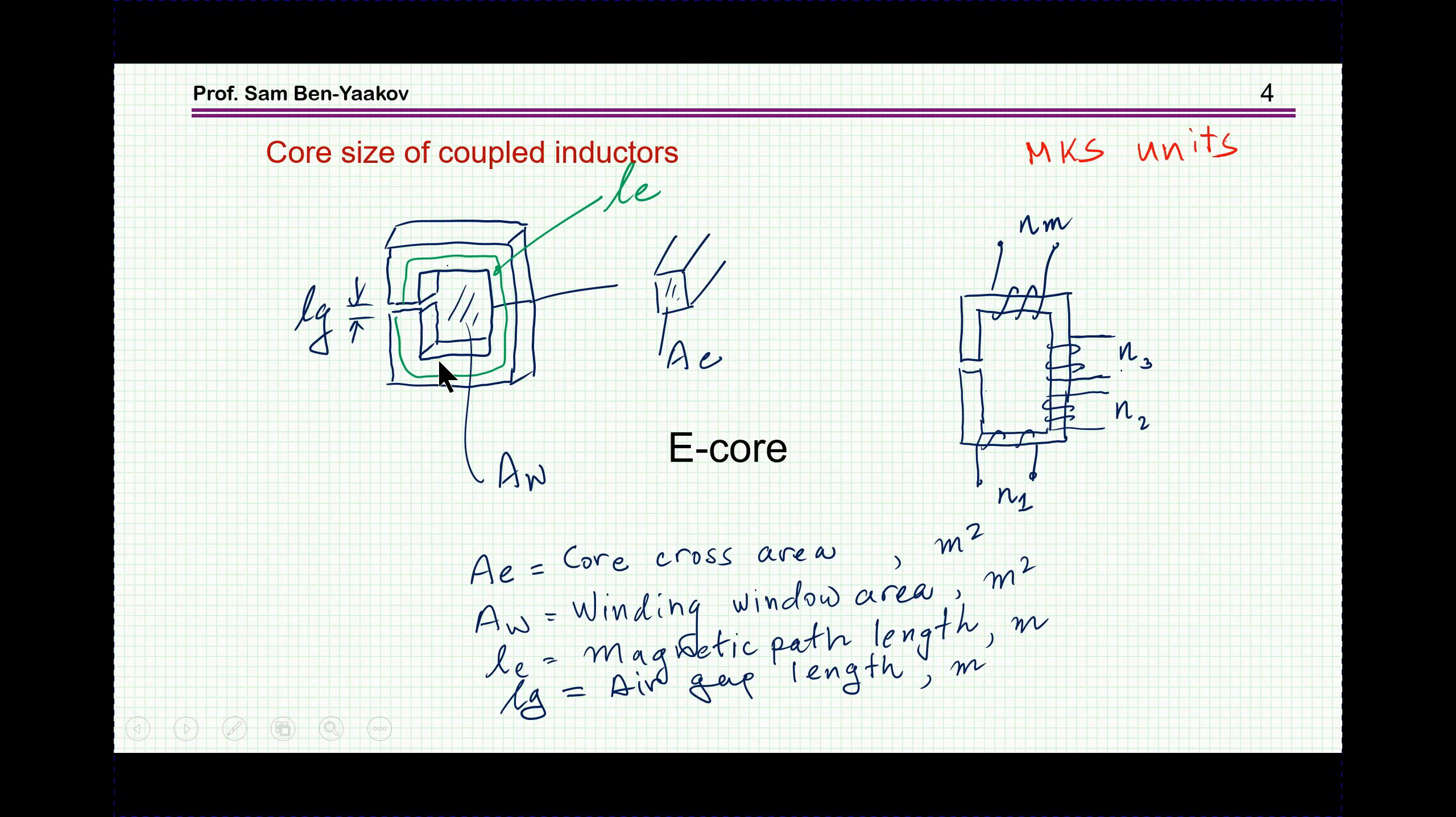We define here for this particular generic core the cross-section area of the core and the area of the winding, the winding area. I'm going to work in the MKS units, that is meters, volts, amps, and Tesla.